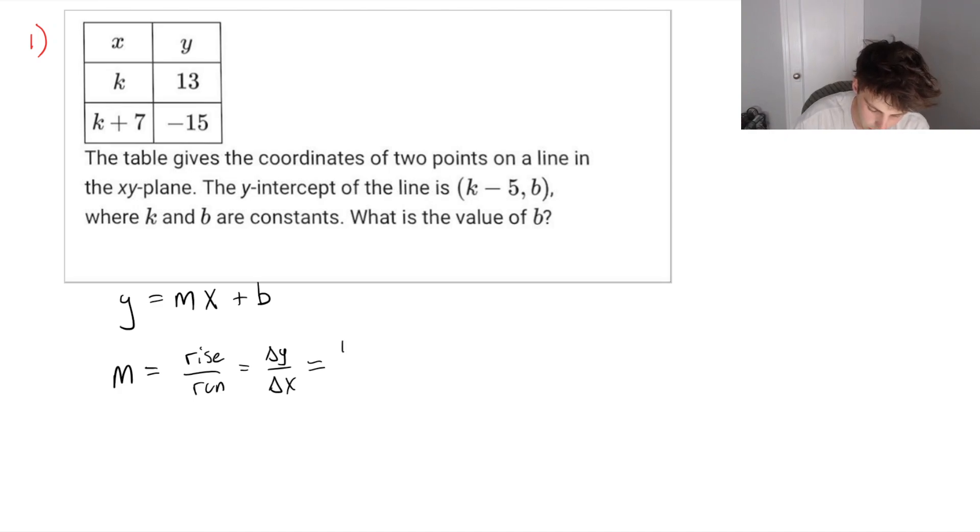Let's do 13 minus negative 15, as long as your points are the same. If I do 13 minus negative 15, that means I need to start with k minus k plus 7. So now we do k minus k plus 7. So this gives us 28 in our numerator. K's cancel out and we get minus 7. And 7 goes into 28 four times, so we get minus 4 as our slope.